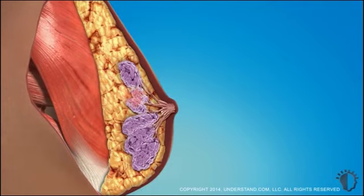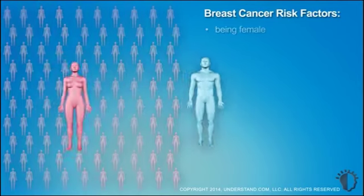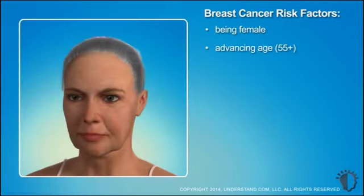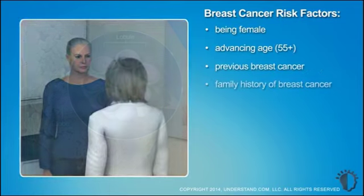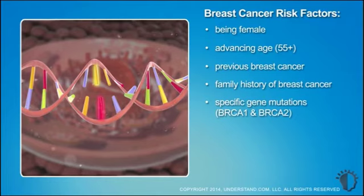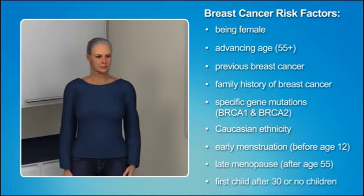Certain factors may increase the risk of developing breast cancer. Gender is the primary risk factor — breast cancer occurs in women at about a hundred times the rate it occurs in men. The chance of developing breast cancer increases with age, previous breast cancer, a family history of breast cancer, and specific gene mutations that increase the risk for both breast and ovarian cancers. Women who are Caucasian are diagnosed more often than other ethnicities. Those who started menstruation early, went through menopause late, had their first child after age 30, or never had children are at increased risk.